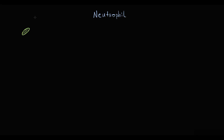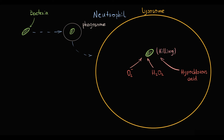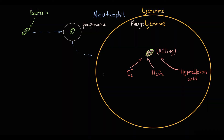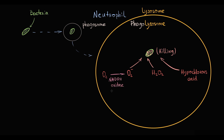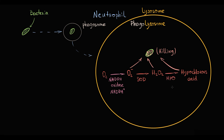When neutrophils ingest bacteria, they place them into the phagosome. To digest them, they fuse the phagosome with a lysosome containing reactive oxygen species — such as superoxide, hydrogen peroxide, and hypochlorous acid — which are highly reactive substances that can destroy bacteria. Fusion of the phagosome with the lysosome results in formation of a phagolysosome, in which the reactive oxygen species kill the bacteria. These reactive oxygen species are formed from oxygen: initially, oxygen is oxidized by NADPH oxidase, which uses NADPH as a coenzyme, to produce superoxide. Then superoxide is converted by superoxide dismutase to hydrogen peroxide, which is subsequently oxidized by myeloperoxidase to hypochlorous acid. This process is known as the respiratory burst, by which neutrophils are capable of killing bacteria.